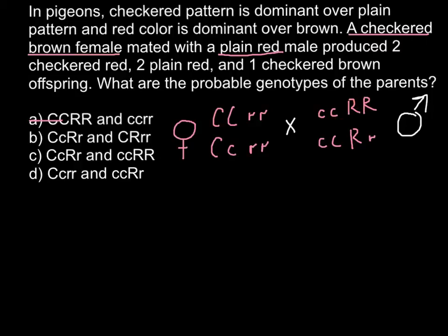Answer B has checkered red with checkered brown and plain red. We have to cross out this answer also. We don't even need to check the genotype of the second parent because we don't have such a parent among our four possible genotypes.